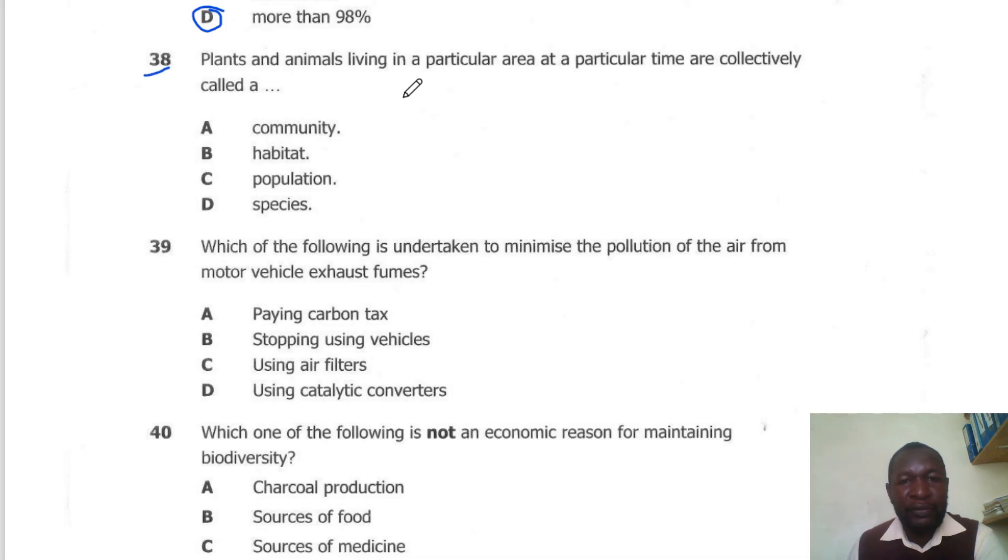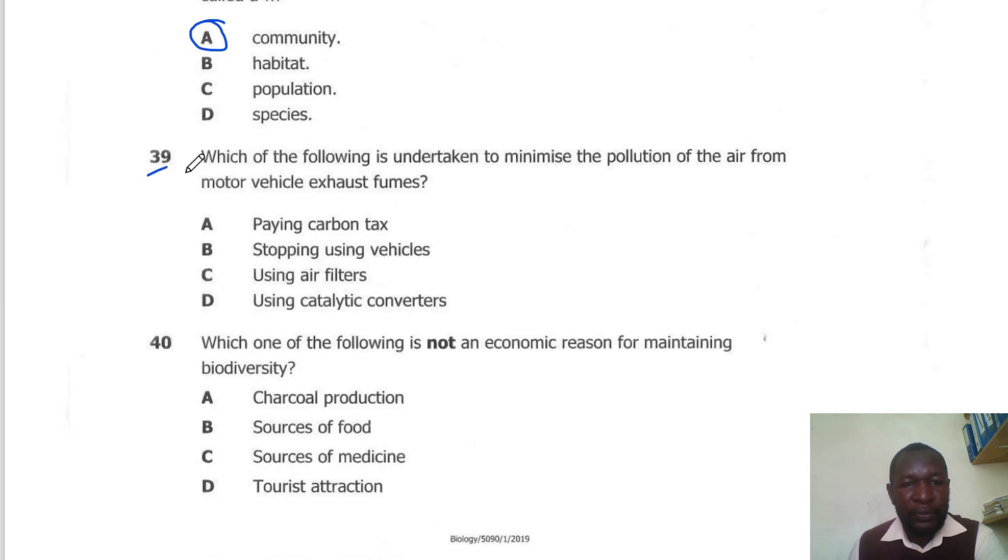Question 38. Plants and animals living in a particular area at a particular time are called a community. So the correct answer here is A. Question 39. Which of the following is undertaken to minimize the pollution of air coming from vehicle exhaust fumes? Exhaust fumes will have a catalytic converter embedded in the exhaust system. So the correct answer here is D. Question 40. Which of the following is not an economic reason for maintaining biodiversity? Charcoal production is not an economic importance of maintaining biodiversity. So the correct answer is A.